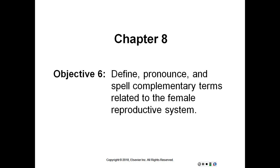Leukorrhea – white discharge. Mastalgia – pain in the breast. Menarche – beginning of menstruation. Vaginal – pertaining to the vagina. Vesicovaginal – pertaining to the urinary bladder and the vagina. Vulvovaginal – pertaining to the vulva and vagina.